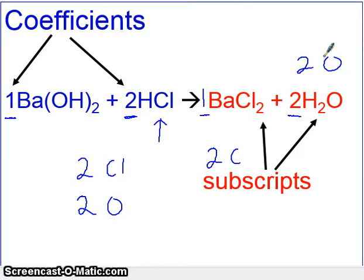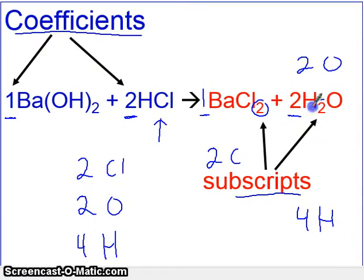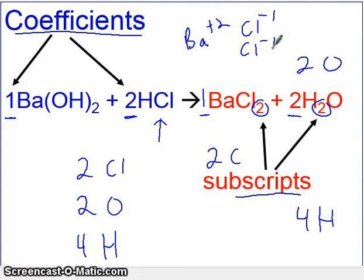These are the coefficients. In order to balance, we'll have to adjust the coefficients. The other numbers in here are subscripts — these are the small numbers that show you what the compound looks like. For example, this two is because barium has a plus two charge and each chlorine has a minus one charge, so you have to have two for one. These numbers will never get changed — you cannot mess with subscripts when balancing a chemical equation. But the coefficients you can adjust. That's what we'll focus on as we balance the chemical equation.